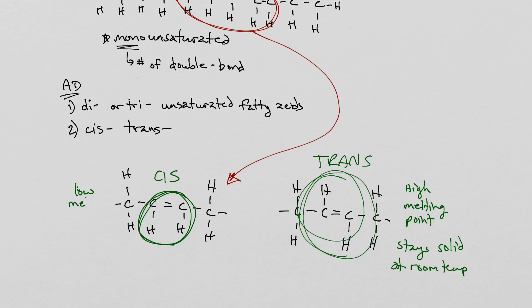These cis fats have a lower melting point. These cis unsaturated fatty acids have a lower melting point, and because they have a low melting point, they can stay in liquid form in your blood and not cause those buildups. All right, that's it.